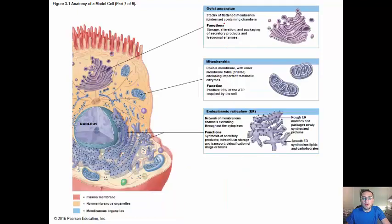Golgi apparatus also helps with the synthesis of proteins. Storage and alteration and packaging of proteins, specifically enzymes. Enzymes are a type of proteins. Mitochondria, that's all about energy. Produces ATP, which is the cell energy. ATP, remember that.